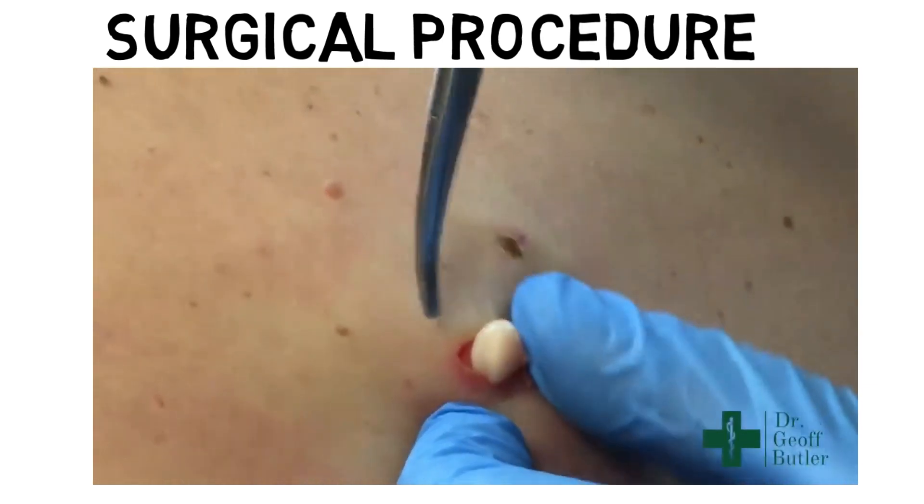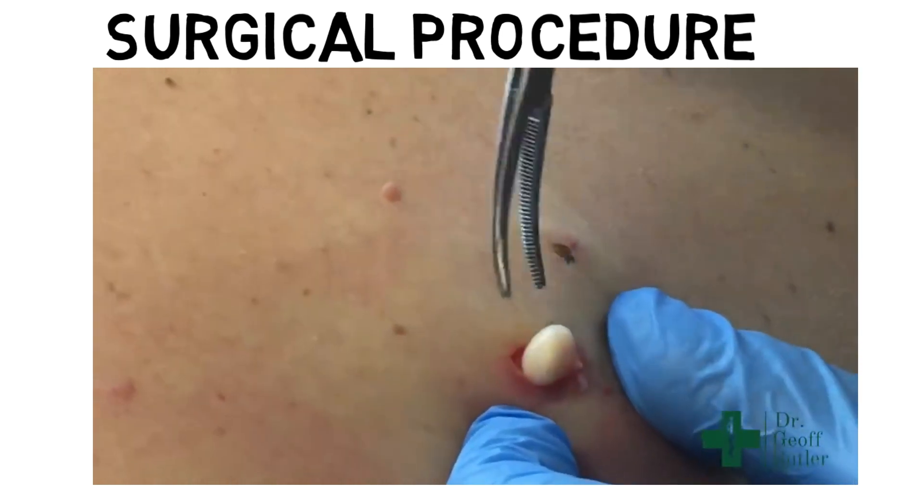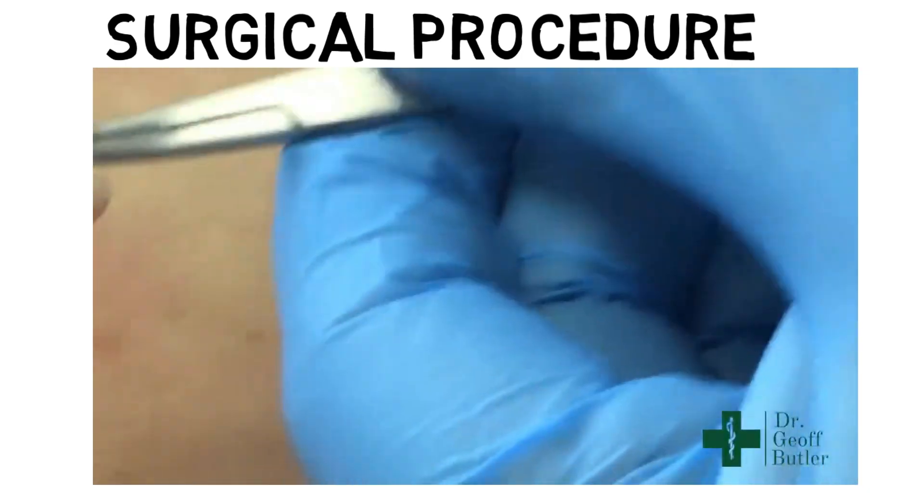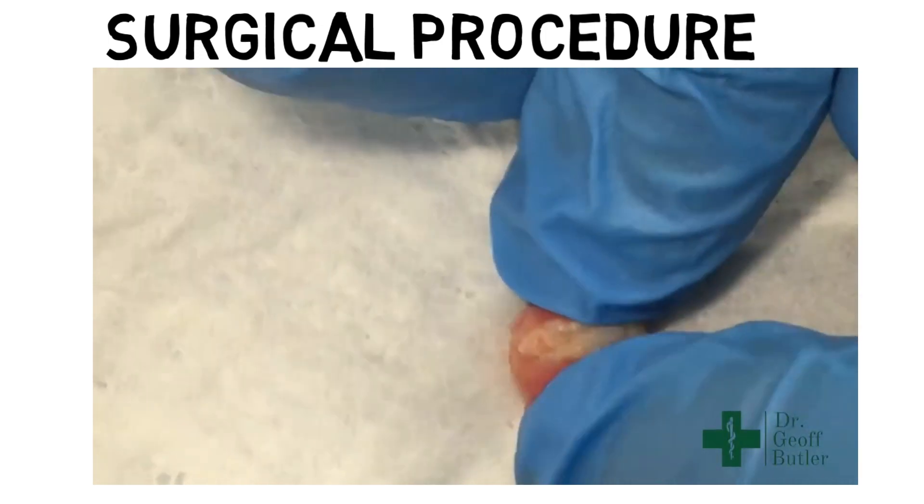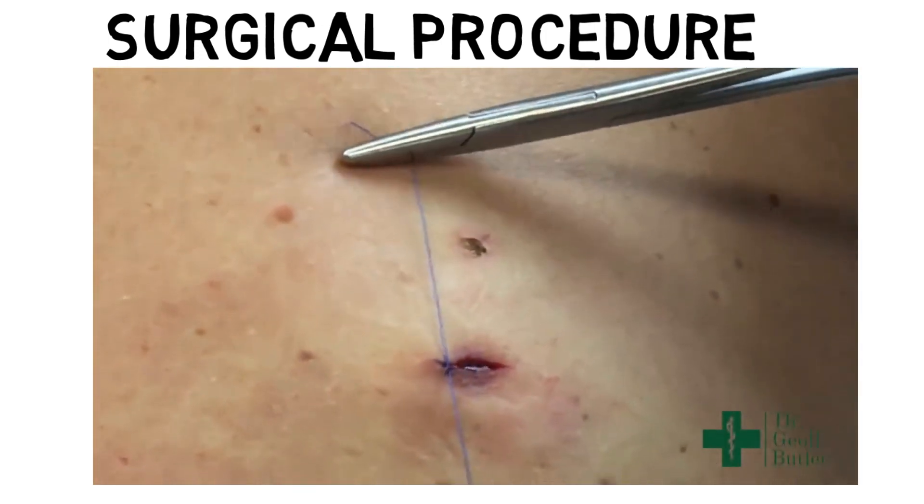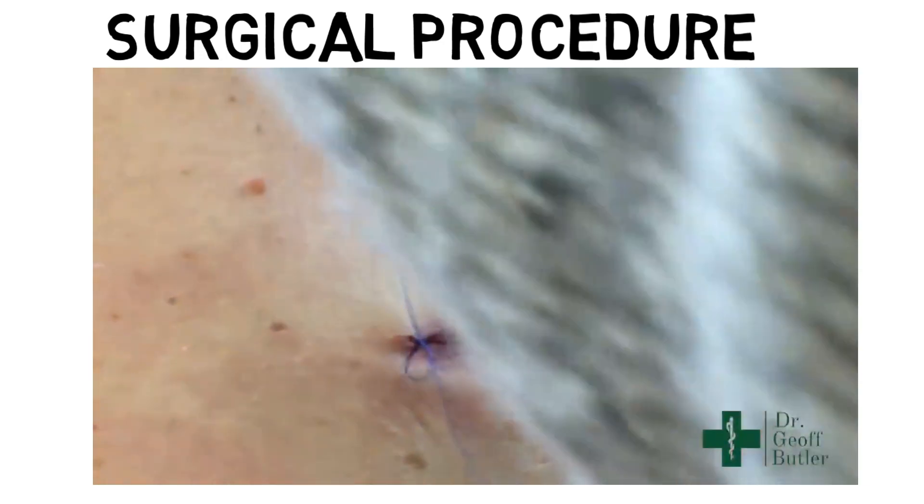Later, the sebaceous cyst is removed along with its capsule. This is necessary—the capsule should be intact with it or else it might lead to another cyst over the same area. You can see that inside the cyst it mainly contains lipid and cellular debris. After removal of the cyst, the wound over the area is precisely stitched and it cures within a few days.